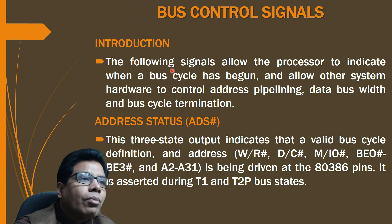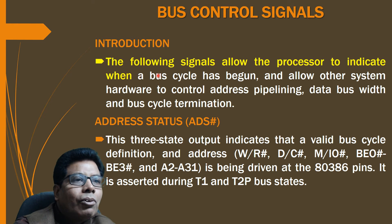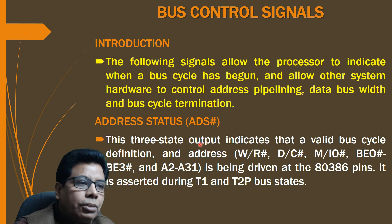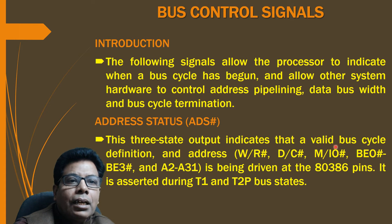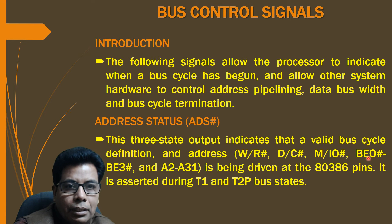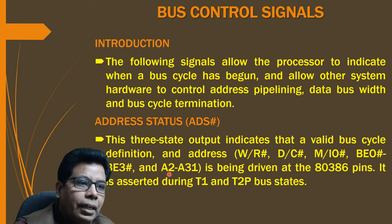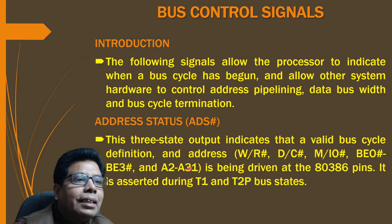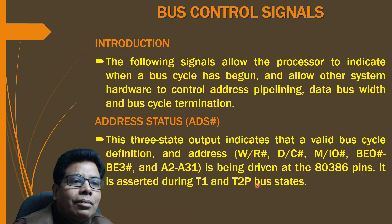The bus control signals allow the processor to indicate when a bus cycle has begun and allow system hardware to control address pipelining, data bus width, and bus cycle termination. The first signal is ADS# (Address Status): this tri-state output indicates that a valid bus cycle definition and address — including W/R#, D/C#, M/IO#, BE0#–BE3#, and A2–A31 — is being driven at the 80386 pins. ADS# is asserted during T1 and T2 bus cycles, similar in function to an address latch enable.